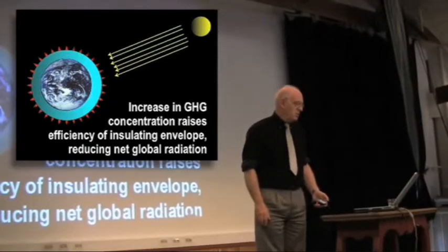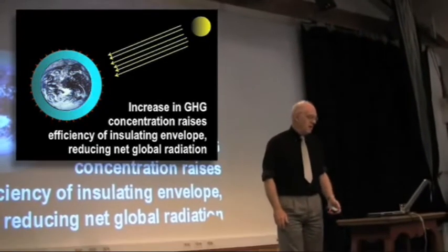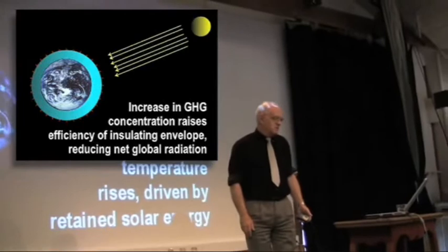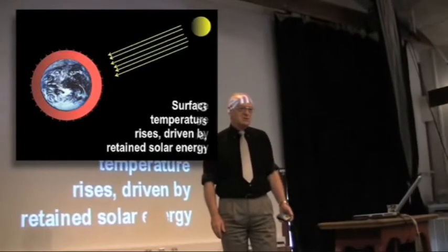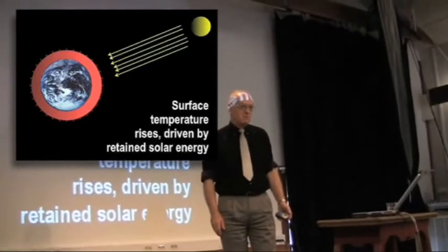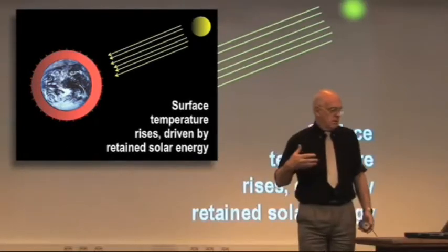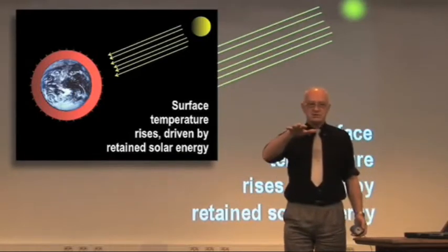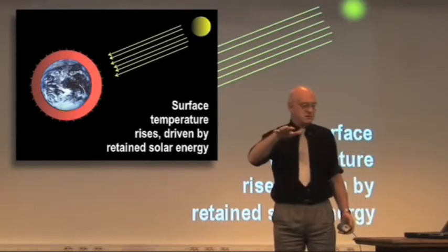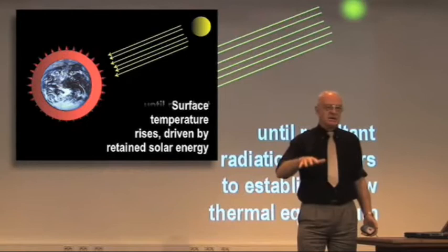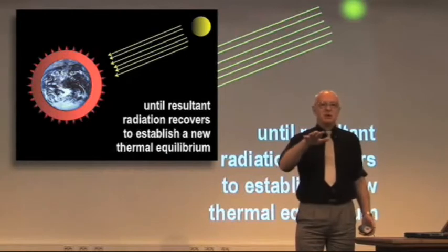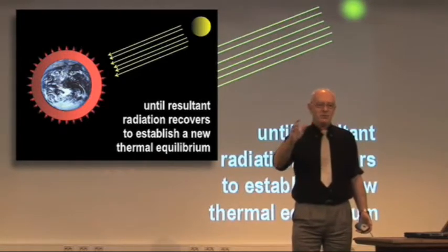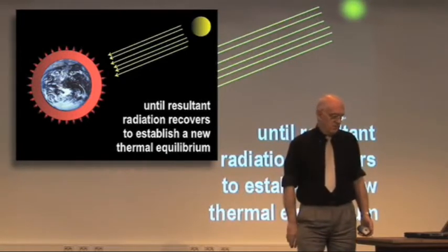We reduce the amount of radiation going back, and that means that temperatures start to rise at the surface. Provided there is just a single step increase in greenhouse gases, then slowly, as the temperature goes up, radiation goes out again and we recover equilibrium.